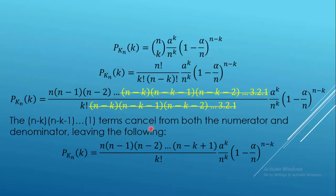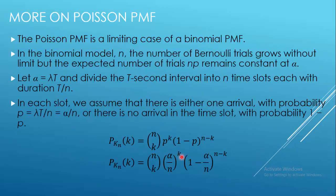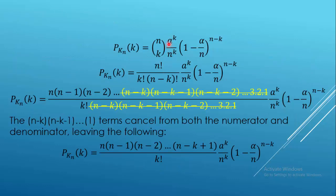In each time slot, we assume either one arrival with probability p = λt/n = α/n, or no arrival with probability 1−p. This is simply a Binomial model, and we plug in p = α/n. Expanding n-choose-k and simplifying: the n! divided by (n−k)! leaves k terms in the numerator, and the (n−k)! factors cancel.